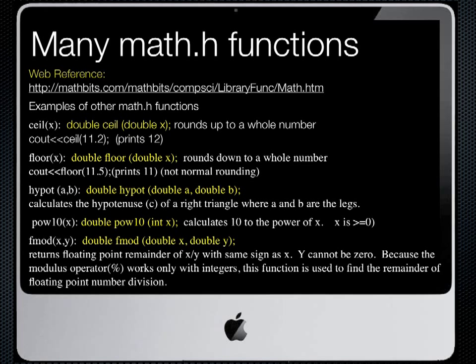The last one we'll highlight, because it might come in handy from time to time, is fmod(x, y). This returns a floating point remainder of x divided by y, much in the same way that we used modulus on whole numbers. y cannot be 0. Remember, modulus only worked when we were dealing with whole numbers. You might find from time to time that you want to know the whole number remainder when we divide a floating point x by another floating point y.